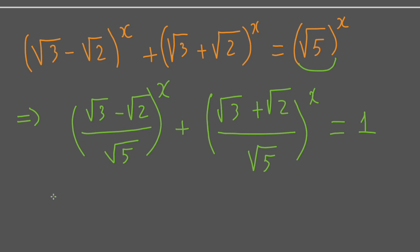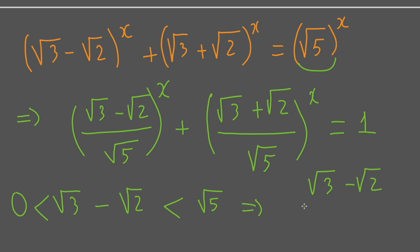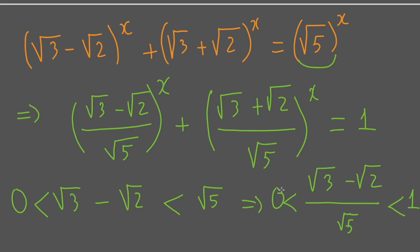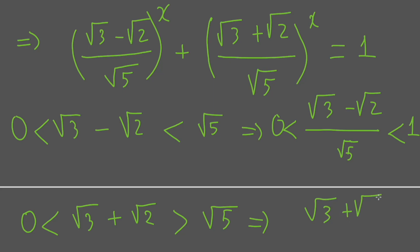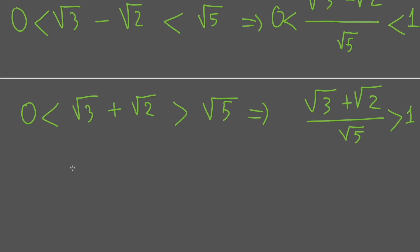Now, we see that √3 − √2 is smaller than √5, and this is greater than 0. So it means (√3 − √2)/√5 is smaller than 1 and greater than 0. On the other hand, we have √3 + √2 greater than √5. Then (√3 + √2)/√5 is greater than 1.